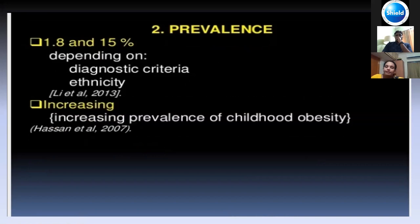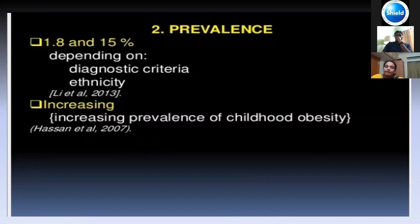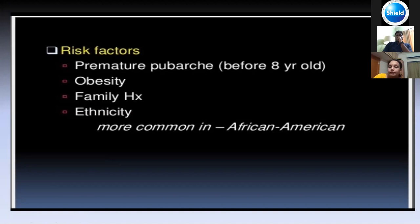African-Americans have higher prevalence. Risk factors that predispose an adolescent to PCOS include early puberty before eight years of age, obesity, a family history of menstrual irregularities, and belonging to the African-American group.